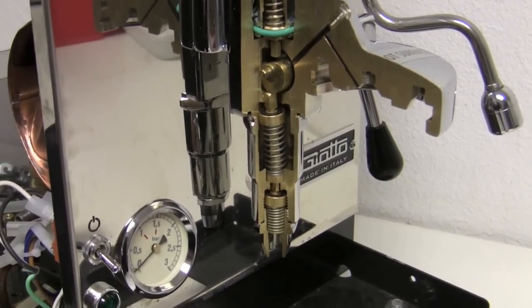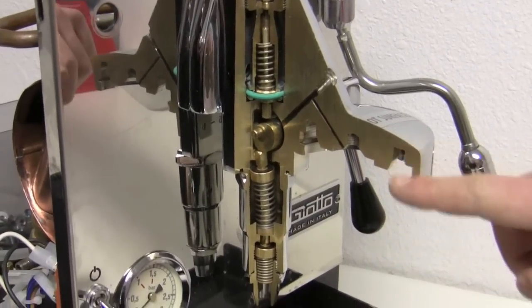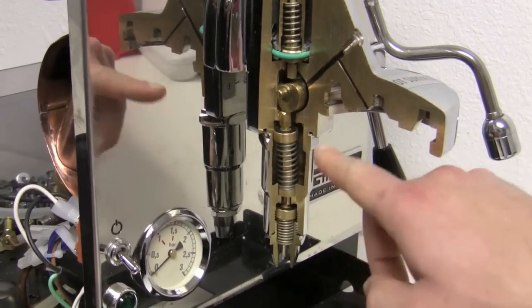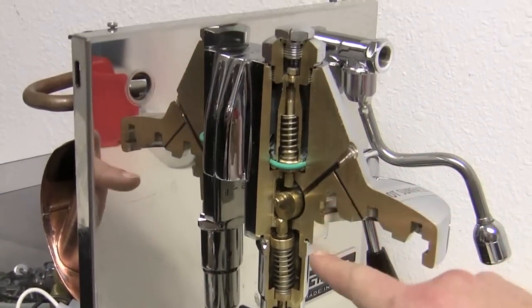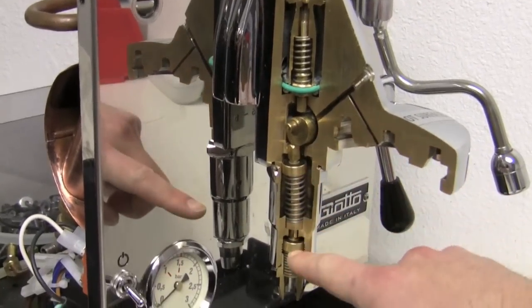And then I noticed when the technicians here at Seattle Coffee Gear repair an E61, like just the standard tune-up, they repair both of these. I mean, they replace them entirely. And then one other valve somewhere. This one right here. Now, I see that there are these black gaskets in here.